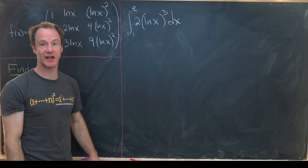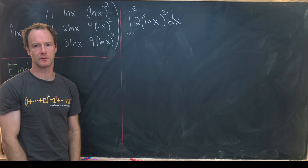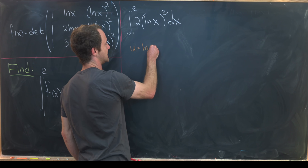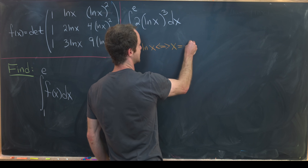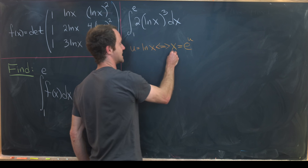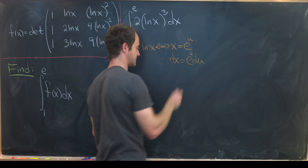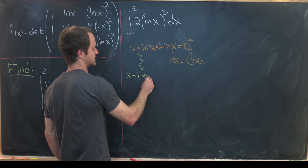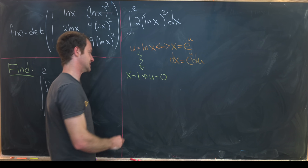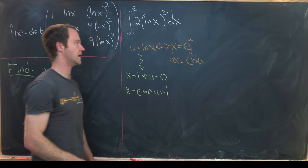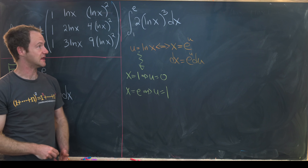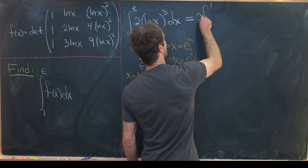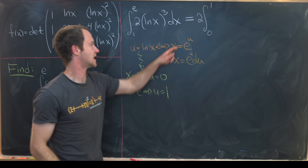We'll use a change of variables: let u = ln(x), so x = eᵘ, and dx = eᵘ du. For the bounds: when x = 1, u = 0; when x = e, u = 1. The integral transforms to 2 times the integral from 0 to 1 of u³ eᵘ du.